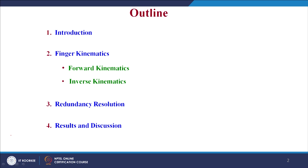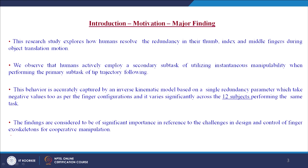Finally, we will be seeing the results and discussion coming out with the summary. Coming to the introduction, this research study explores how humans resolve the redundancy in their thumb, index and middle fingers while performing object translation motion. We observe that humans actively employ a secondary subtask of utilizing manipulability measure when performing a primary subtask of tracking a given desired trajectory of the finger tip. This behavior is accurately captured by an inverse kinematic model based on a single redundancy parameter which takes both negative values and also changes in magnitude across the 12 subjects who performed the same task of object manipulation. These findings are considered to be of significant importance towards the challenges of the design and control of hand exoskeletons, especially finger exoskeletons for cooperative object manipulation.